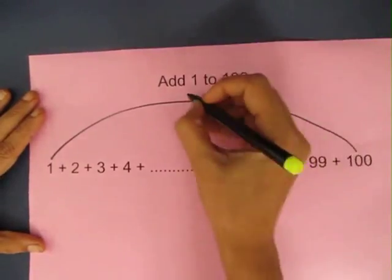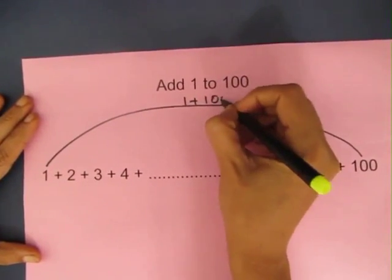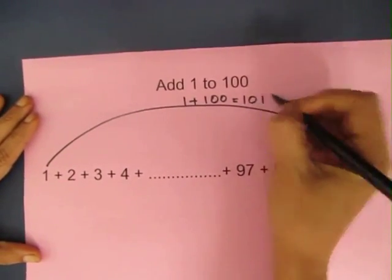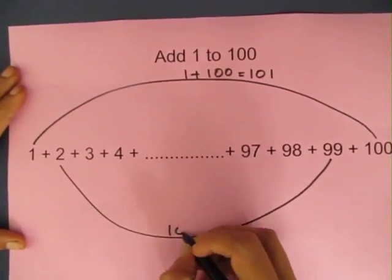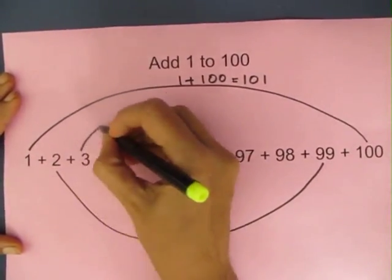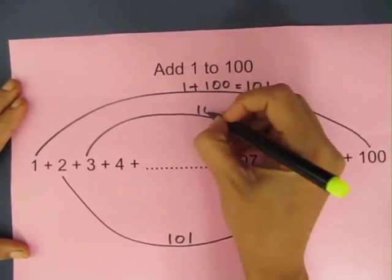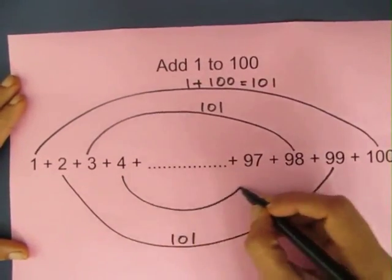He looked at the first and the last number. 1 plus 100, the addition was 101. 2 and 99, the addition again was 101. 3 and 98 added to 101, and so did 4 plus 97.